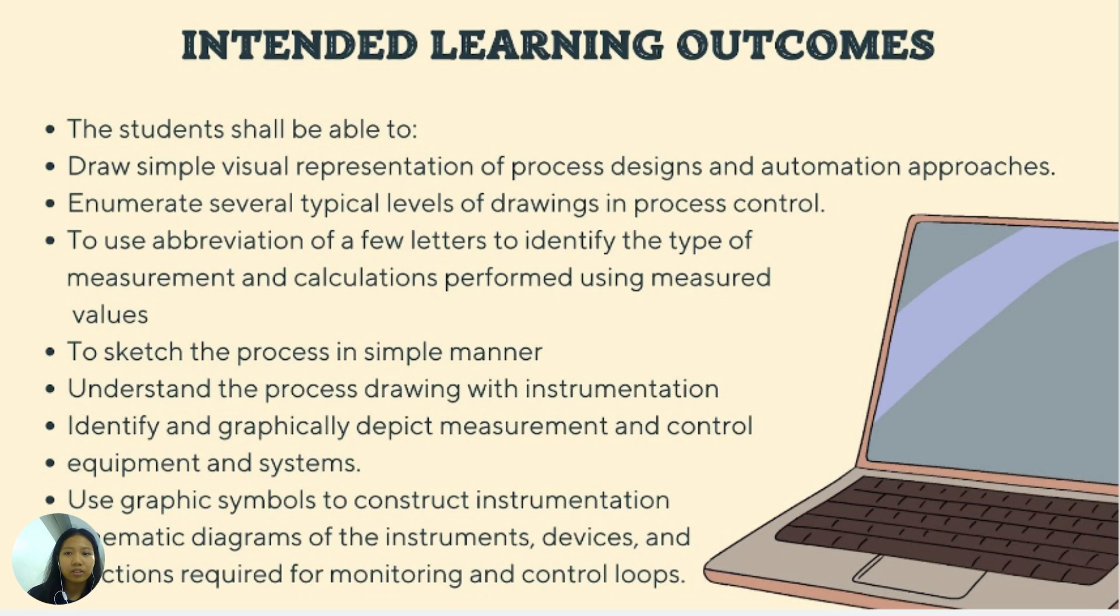For the intended learning outcomes, the student shall be able to: draw simple visual representation of process designs and automation approaches, enumerate several typical levels of drawings in process control, use abbreviation of a few letters to identify the type of measurement and calculations performed using measured values, sketch the process in simple manner, understand the process drawing with instrumentation, identify and graphically depict measurement and control equipment and systems, and use graphic symbols to construct instrumentation schematic diagrams of the instruments, devices, and functions required for monitoring and control loops.